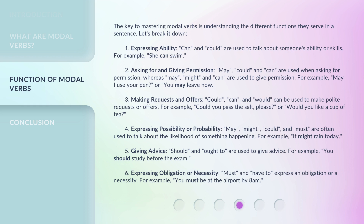Let's break it down. 1. Expressing ability. Can and could are used to talk about someone's ability or skills. For example: she can swim.